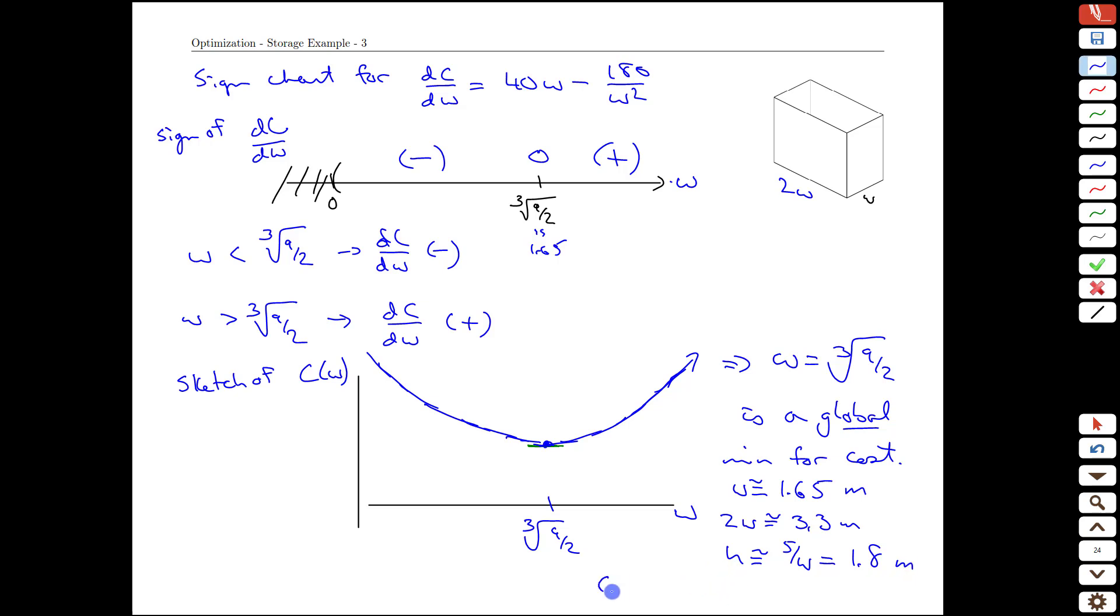Our cost value at the optimum is going to be defined by our formula, which was 20w squared minus 180 over w. That was our original function. And if we calculate that out using our width of 1.65 meters, we're going to get a cost of approximately $163.